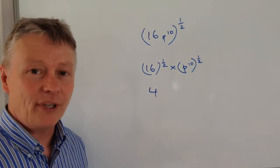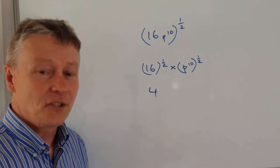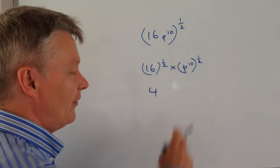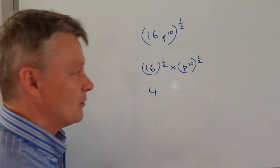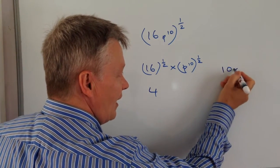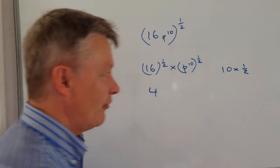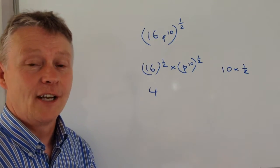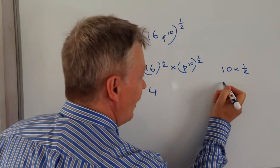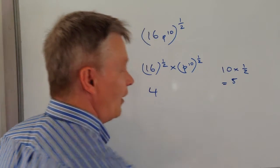Next bit is we've got P to the power of 10 to the power of a half. Well, the indices there we actually multiply. So what we're doing is we're saying 10 times a half. Well, that's the same as saying 5 because a half of 10 equals 5.